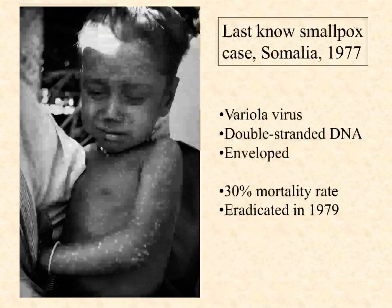That was the last known naturally occurring case. In the early 1980s, there were a couple of lab workers — I believe they were in England. Their freezer stock melted and they were cleaning it up. They were exposed inadvertently, and I believe both of them died from that. We sometimes call this the variola virus — it's an older term. More commonly, though, we just call it the smallpox virus.